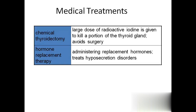Medical treatments: chemical thyroidectomy involves injecting a large dose of radioactive iodine to kill a portion of the thyroid gland, usually to avoid surgery. Hormone replacement therapy: if a person has hyposecretion - like pan-hypopituitarism or hypothyroidism - the hormone is replaced with pills or injections. This is very commonly done for pregnant women, where the doctor prescribes progesterone tablets to maintain the uterine environment and keep the baby healthy.